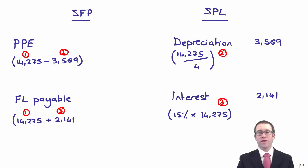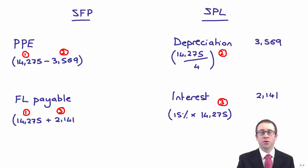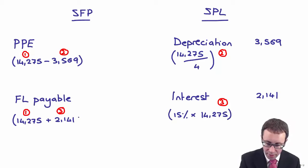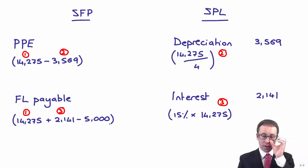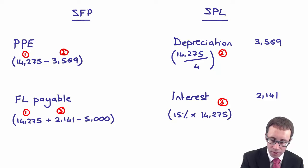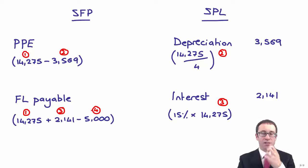Once we've dealt with the interest, we deal with step four — the payment. We credit the bank with the $5,000 lease payment. The important side of the entry is the debit to the finance lease payable, which reduces the outstanding liability by the $5,000 cash payment.